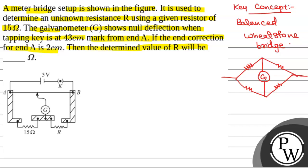...then this is R1, this is R2, this is R3 and this is R4. So then the condition for no current through the galvanometer will be R1 by R2 is equal to R3 by R4, and this is the balanced Wheatstone bridge.